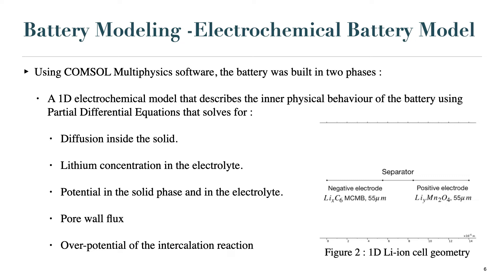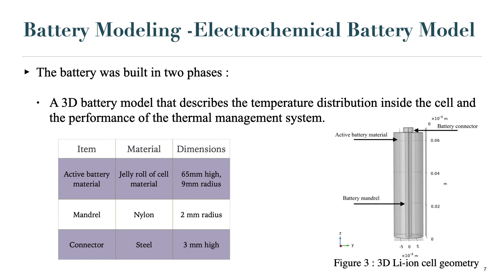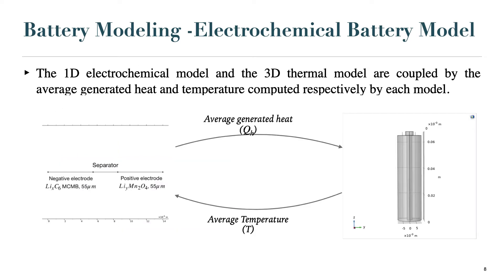First, a 1D electrochemical model that describes the inner physical behavior of the battery. The second phase consists of a 3D battery model that describes the temperature distribution inside the cell and the performance of the thermal management system. Next, we use the average generated heat and the average temperature to couple both the 1D and the 3D cell model.